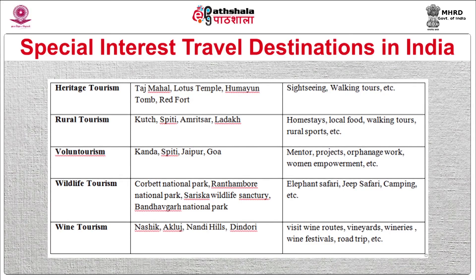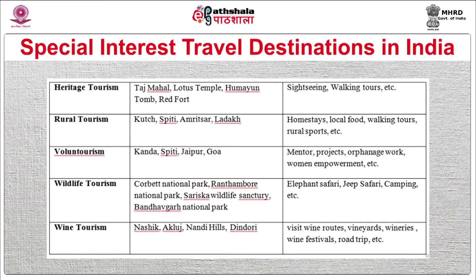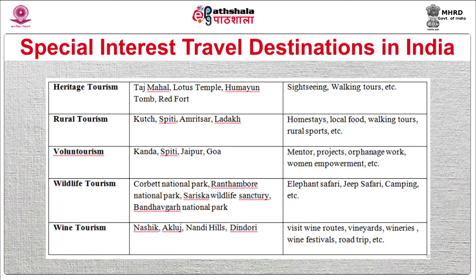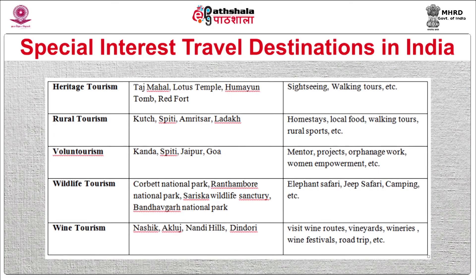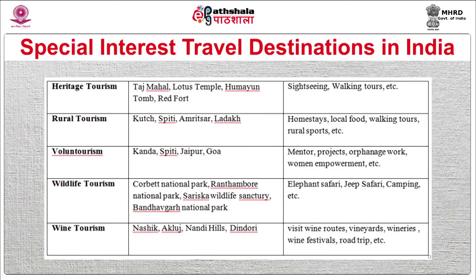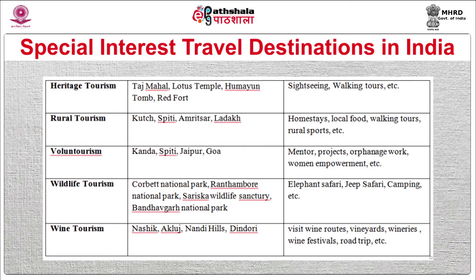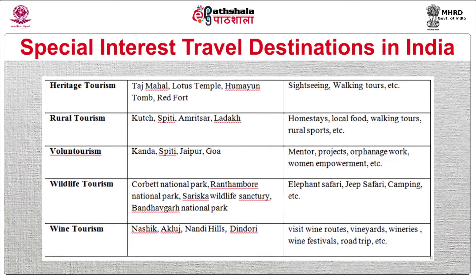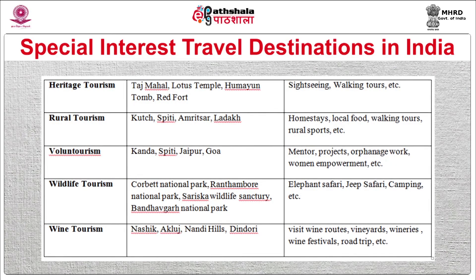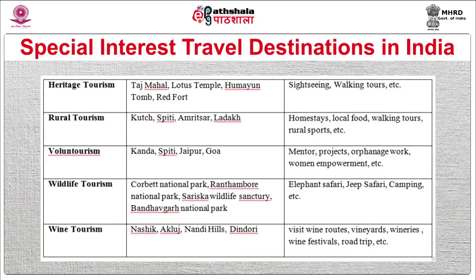For rural tourism, Rann of Kutch, Spiti, Amritsar, Ladakh, and many rural areas of India are famous, with activities including homestays, local food, walking tours, and rural sports. For volunteer tourism, Kanda, Spiti, Jaipur, and Goa are popular, with activities including orphanage work, women's empowerment, and rural empowerment.